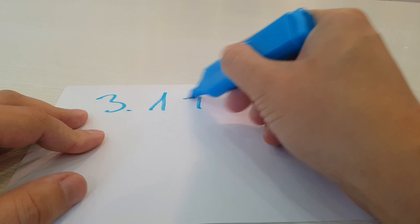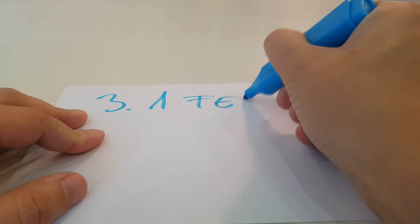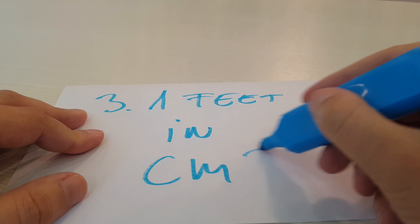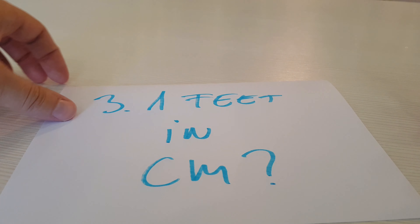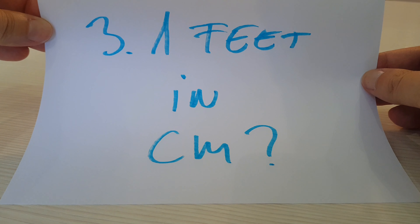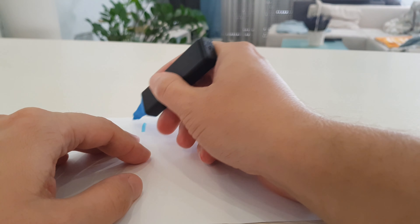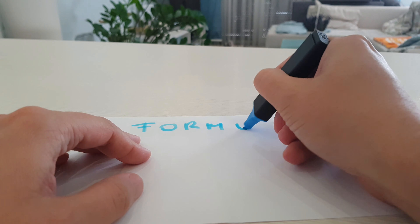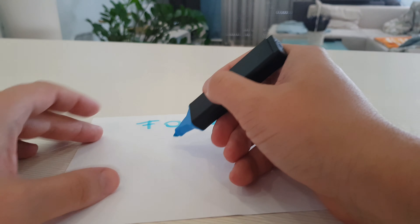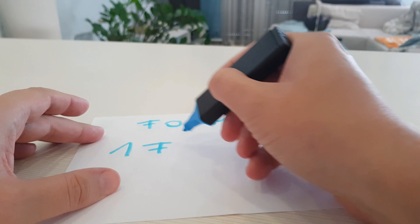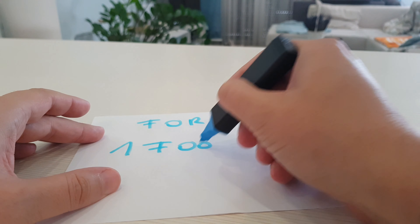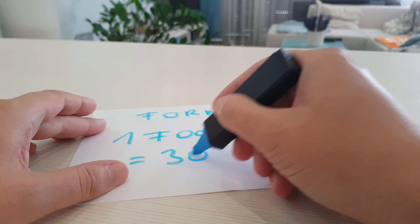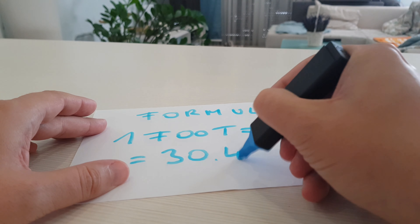In this video I will show you how to convert 3.1 feet to centimeter. Here is the formula: one foot equals 30.48 centimeter.